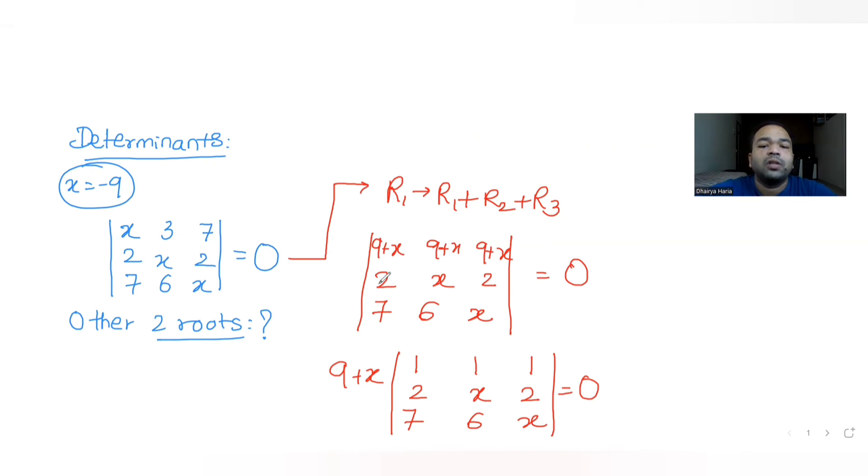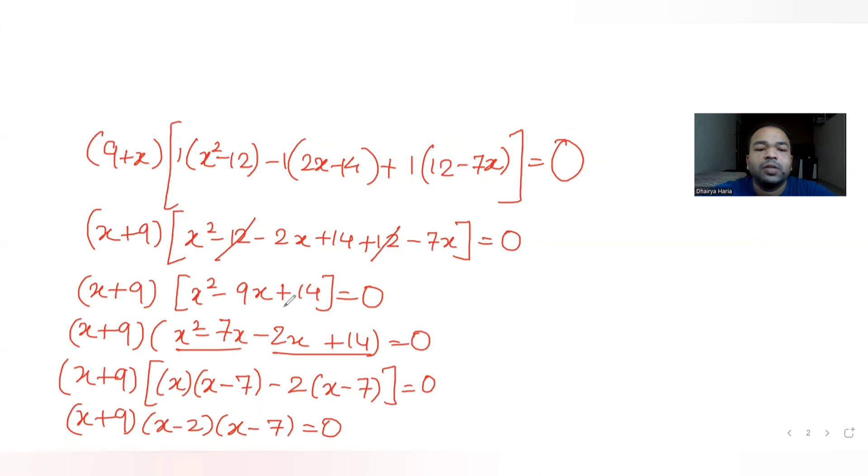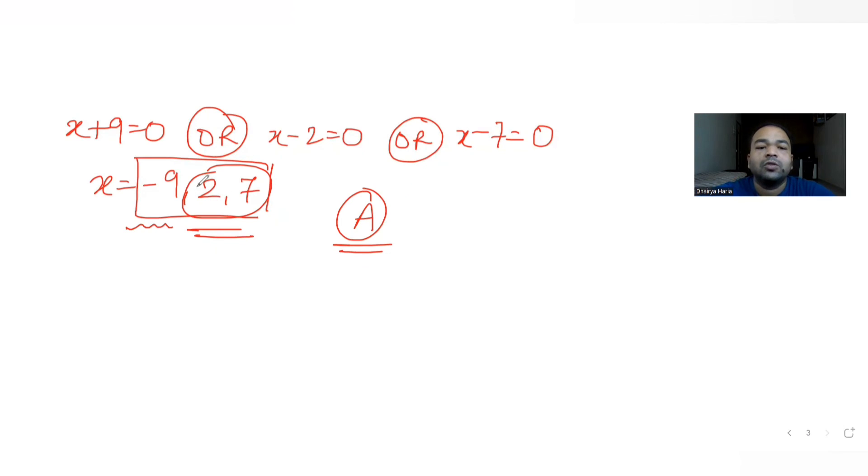So it's better you apply a row transformation, convert all the elements of the first row into the same thing, and then take it out. So you get one term of x plus 9 out. Then whatever you solve, you get a quadratic equation and it becomes easier to solve that quadratic equation further. And the answers which we get for the roots of the equation are 2 and 7, and that is our option A.